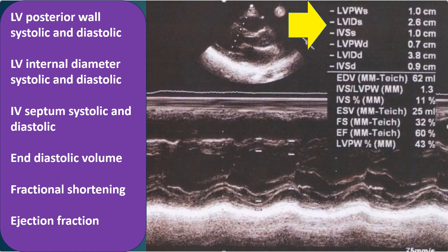EF ejection fraction. Ejection fraction by M-mode echo, though often used, has a lot of limitations being a one-dimensional measurement. 2D and 3D methods to calculate ejection fraction are better.